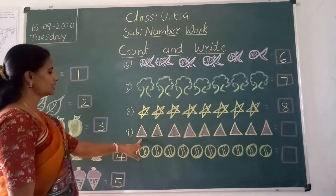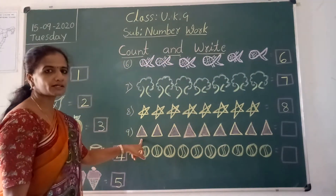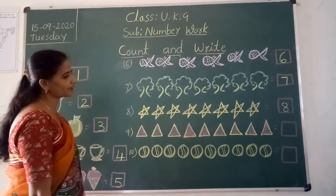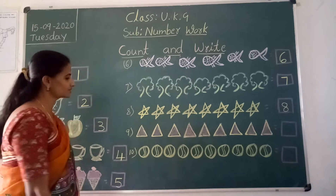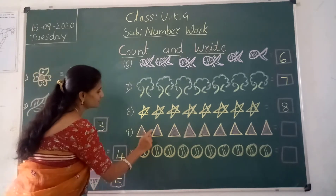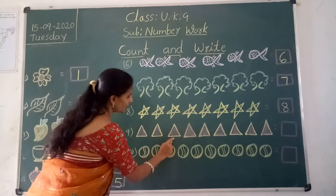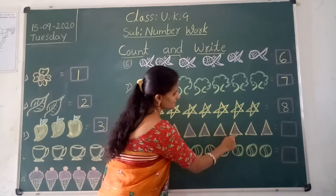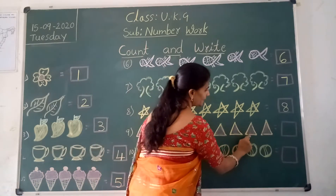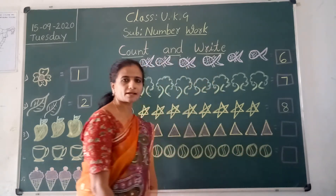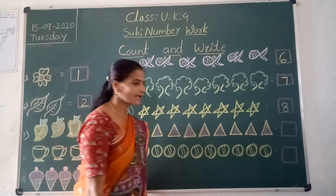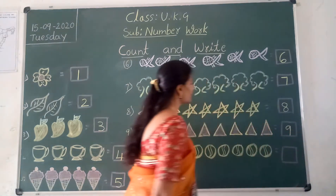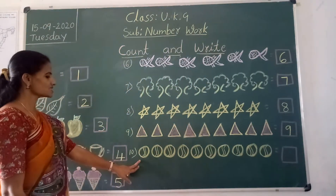Next picture — triangles. What are these? Triangles. How many triangles are there? We count: 1, 2, 3, 4, 5, 6, 7, 8, 9. How many triangles? 9. So we should write in this box — 9.